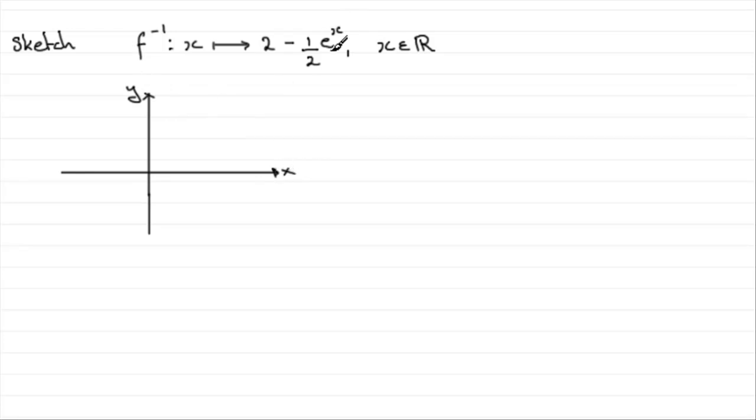So we've got our axes x and y. So e to the x, what's that going to look like? Well, it should look something like this. Exponential graph going through 1 on the y axis. There we go, y equals e to the power x.